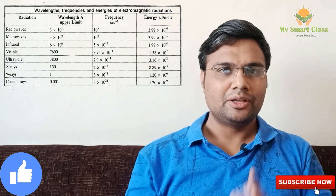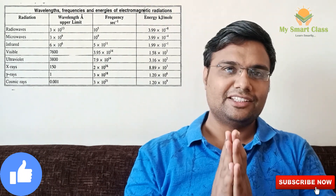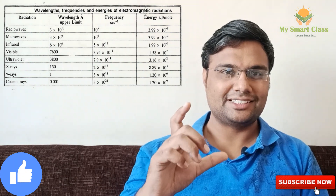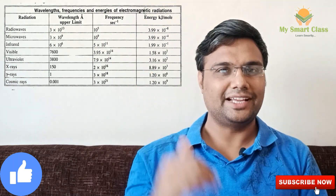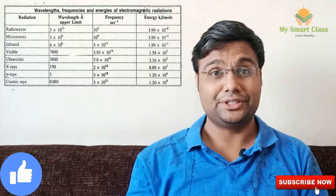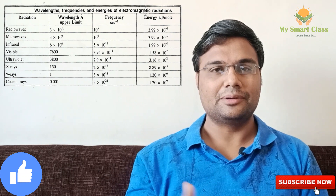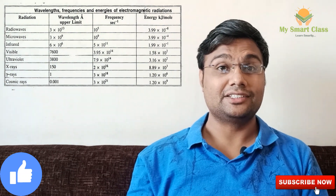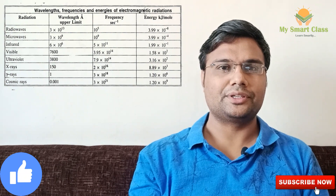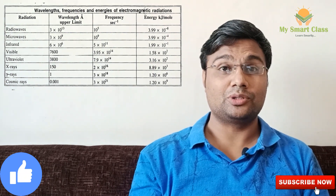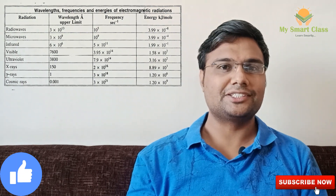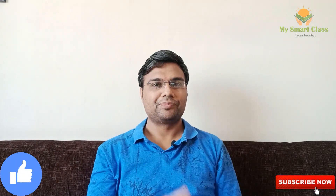After UV rays comes the visible range, which spans 400 nanometers to 800 nanometers — the only region visible to the human eye. After visible light comes infrared (IR) radiation, then the microwave region, and finally radio waves. Radio waves have the lowest energy with the highest wavelength, while cosmic rays are the most energetic radiation in the spectrum.